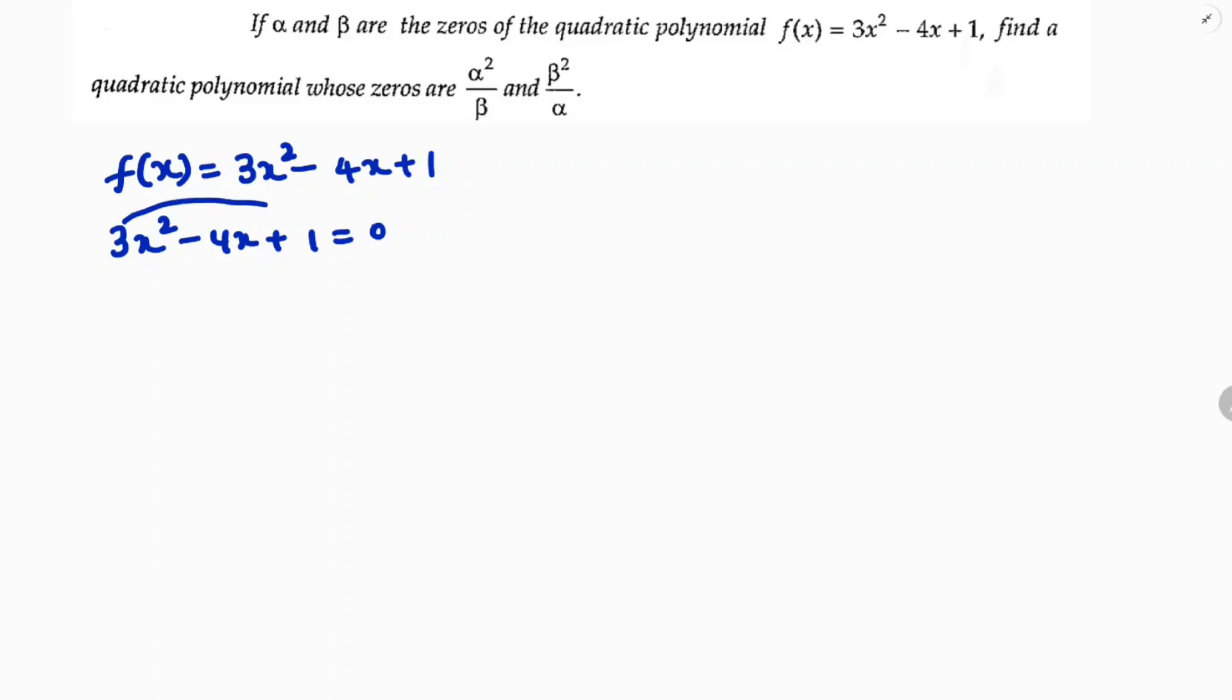So here 3 into 1 is 3, so the factors will be the same: 3x² - 3x - 1x + 1, because 3 factors are 3 and 1, so -3 - 1 is -4.